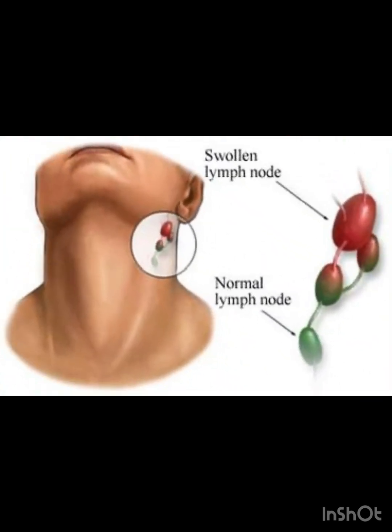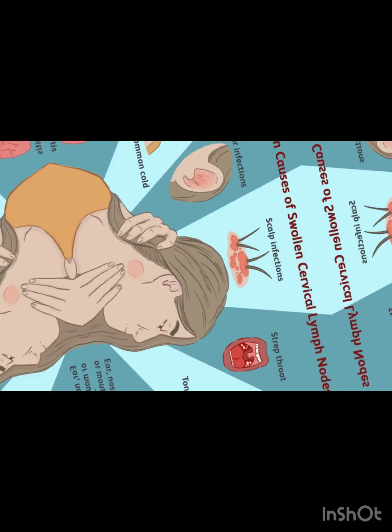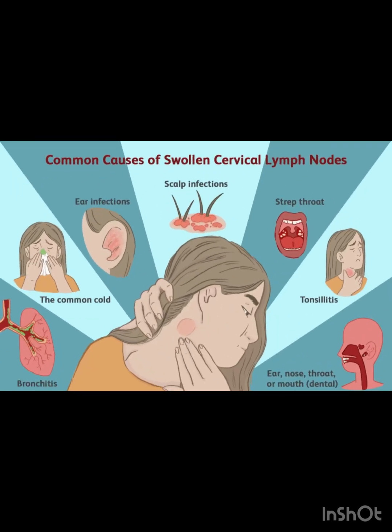Normal lymph nodes are smooth, small, tiny pea-sized lumps. The most common causes of swollen cervical lymph nodes include respiratory infections such as bronchitis, a common cold, ear infections, scalp infections, strep throat, tonsillitis, and ear, nose and throat, or mouth and dental problems.